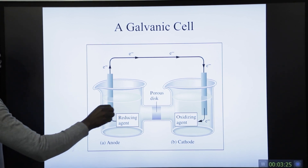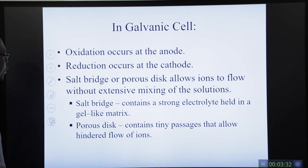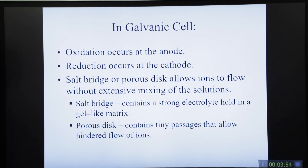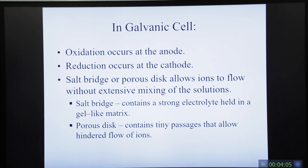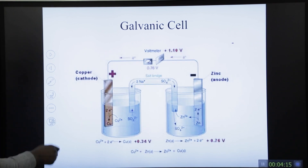Electrons flow from the anode to the cathode through the outside channels. To summarize: oxidation occurs at the anode, reduction occurs at the cathode. The salt bridge or porous disk allows ions to flow without extensive mixing of the solution, balancing up the ions across the concentration gradient. The salt bridge contains a strong electrolyte held in a gel-like matrix, and a porous disc contains tiny passages that allow hindered flow of ions.